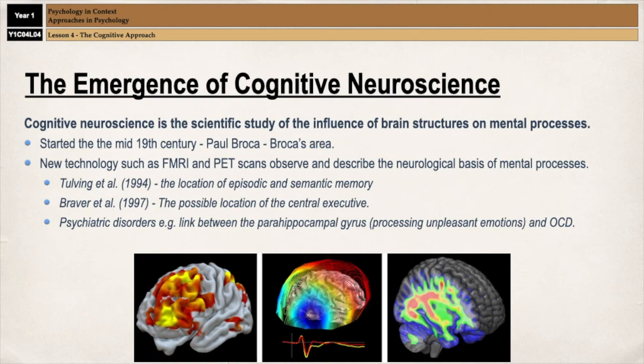In more recent years, cognitive neuroscience has expanded to include the use of computational models, which has led to the development of mind mapping techniques known as brain fingerprinting. In the future, this could be used in a variety of different ways, for example to measure the brain waves of eyewitnesses in court to determine whether or not they're lying. The development of cognitive neuroscience is named on the spec, and you could get asked about it, so make sure you can document how cognitive neuroscience emerged over the years.